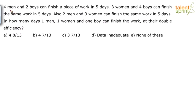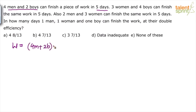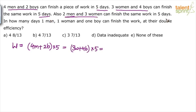The first part says 4 men and 2 boys can finish a work in 5 days. Using the work equation W = persons × days, we get (4m + 2b) × 5. The same work is done by 3 women + 4 boys in 5 days: (3w + 4b) × 5. And 2 men + 3 women in 5 days: (2m + 3w) × 5.